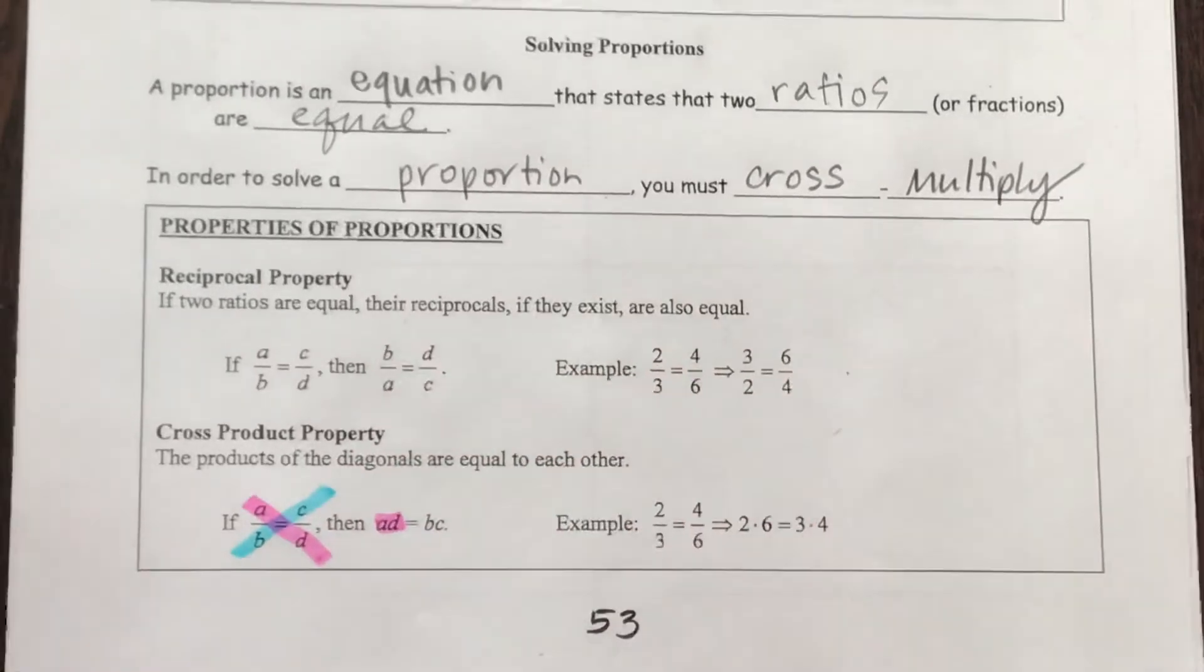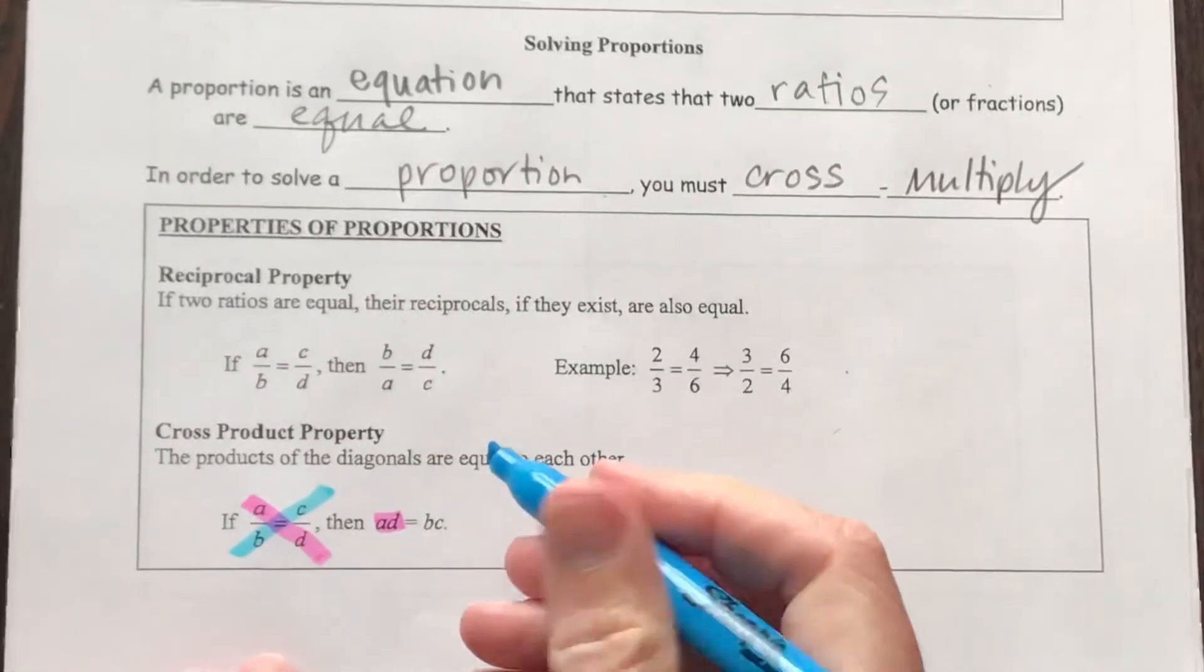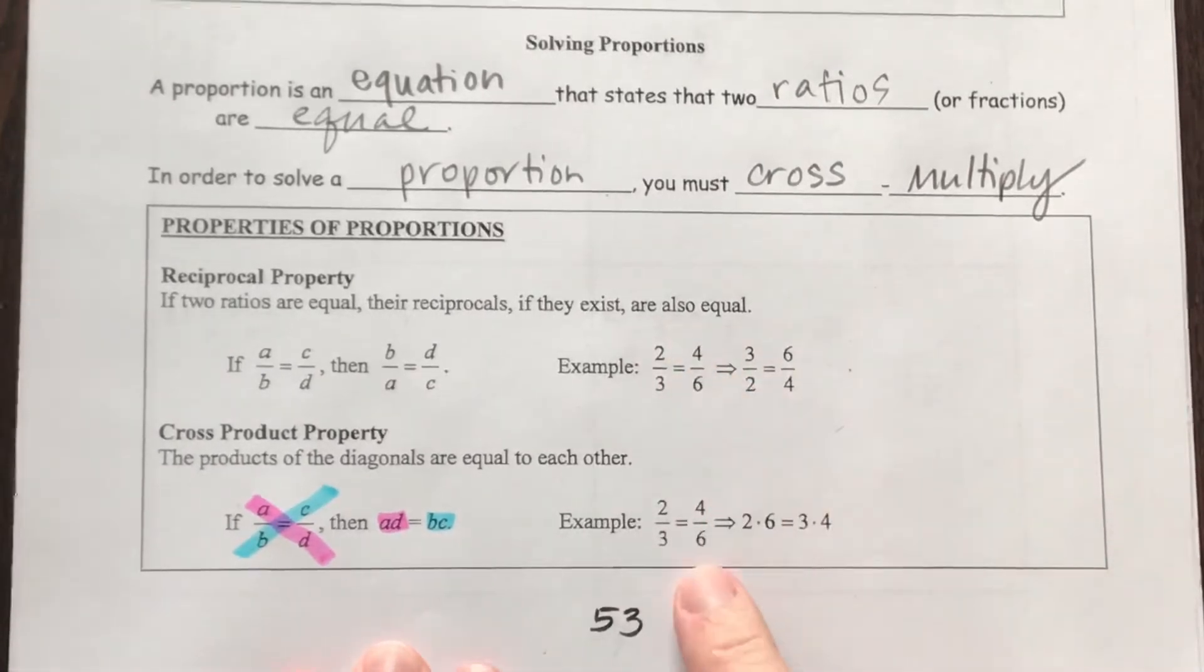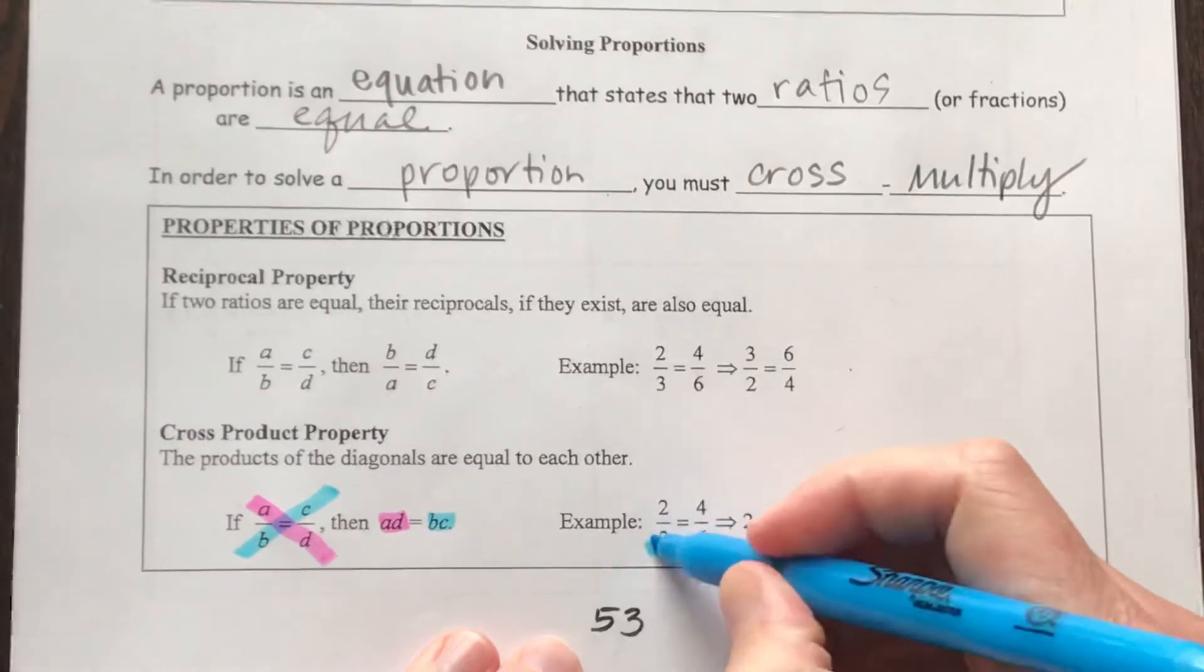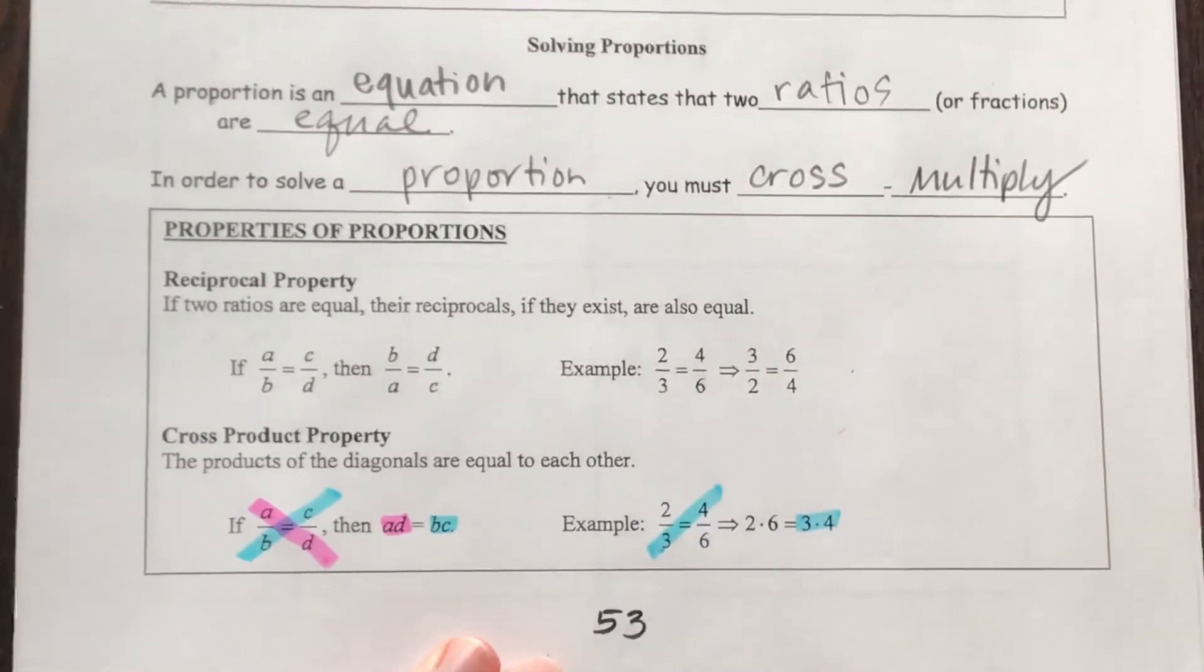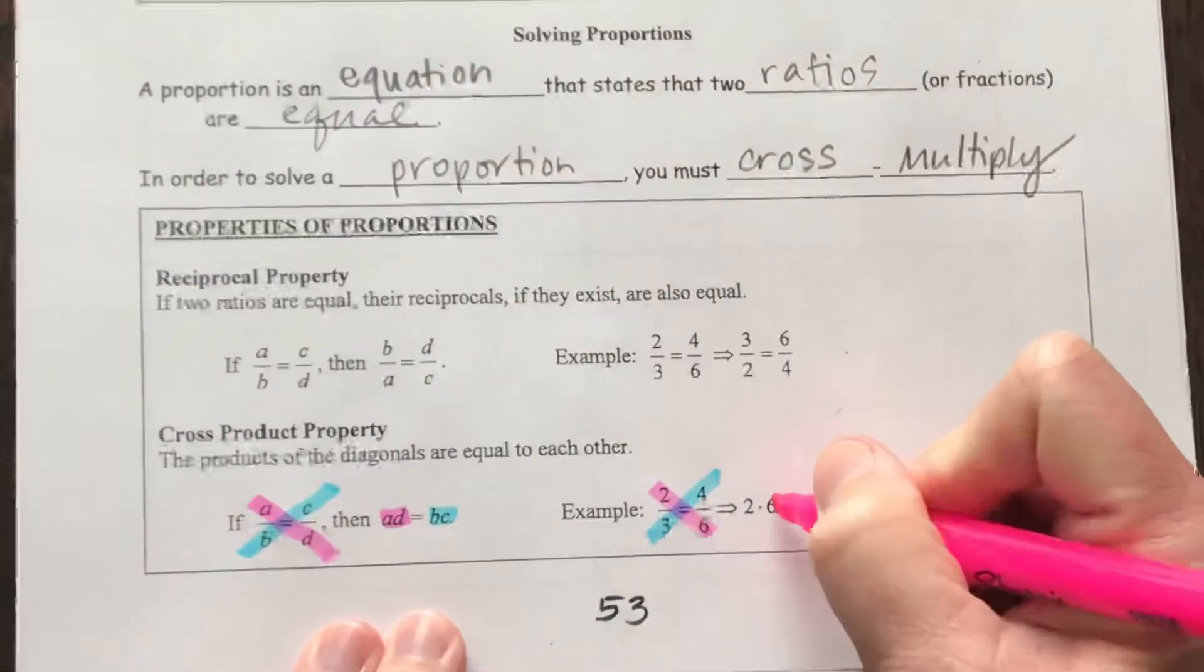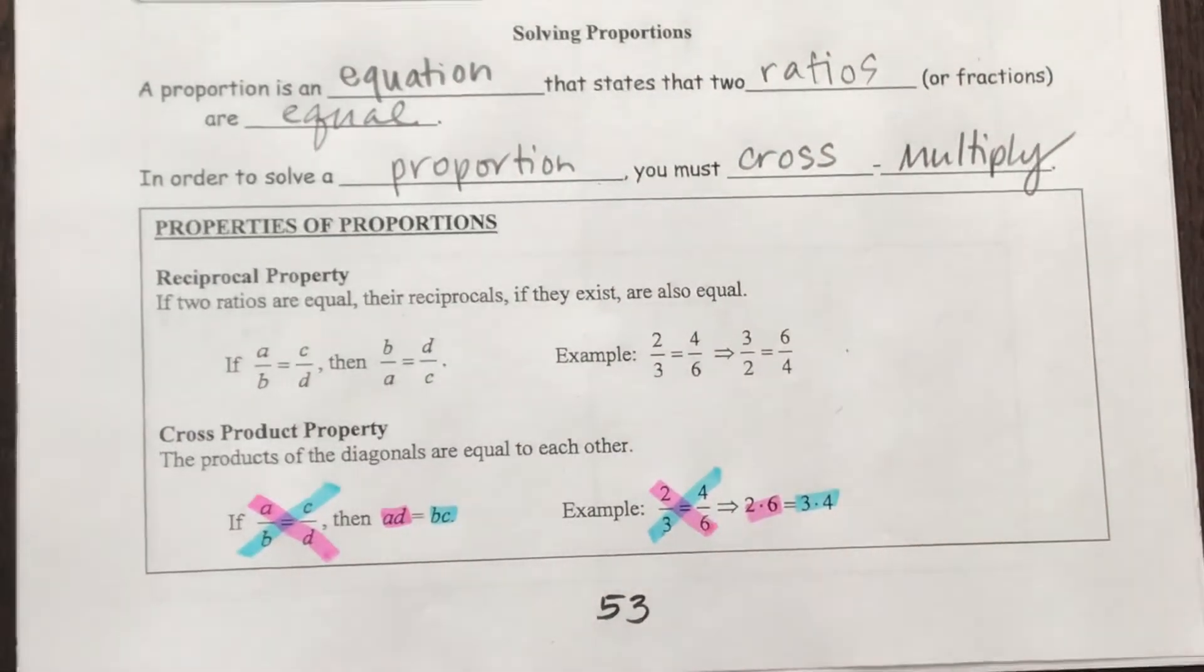Notice how AD multiplied together will be equal to BC multiplied together. And with that same example that we had up above, if we multiply three times four, we're going to get an answer of 12. But notice that is the exact same as if we take two times six, you also get 12.